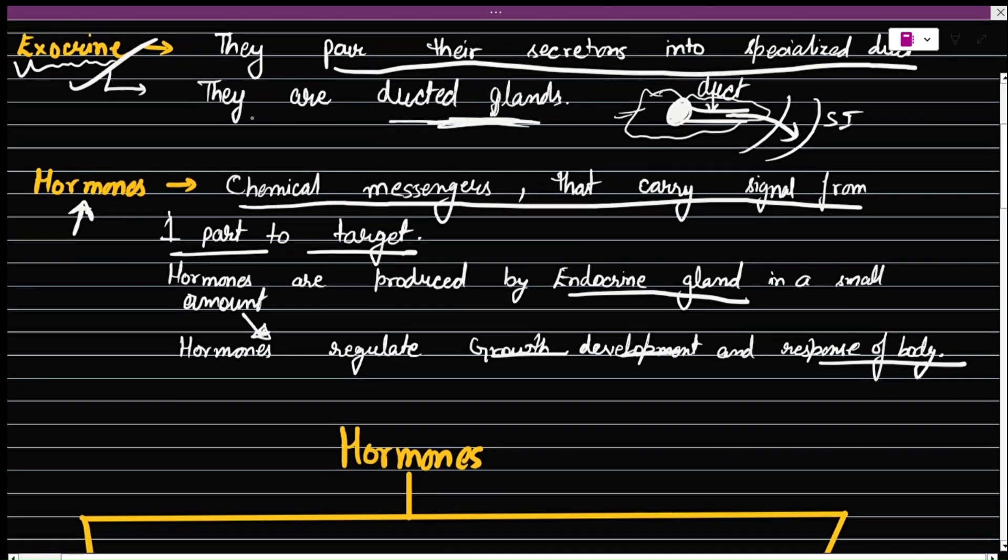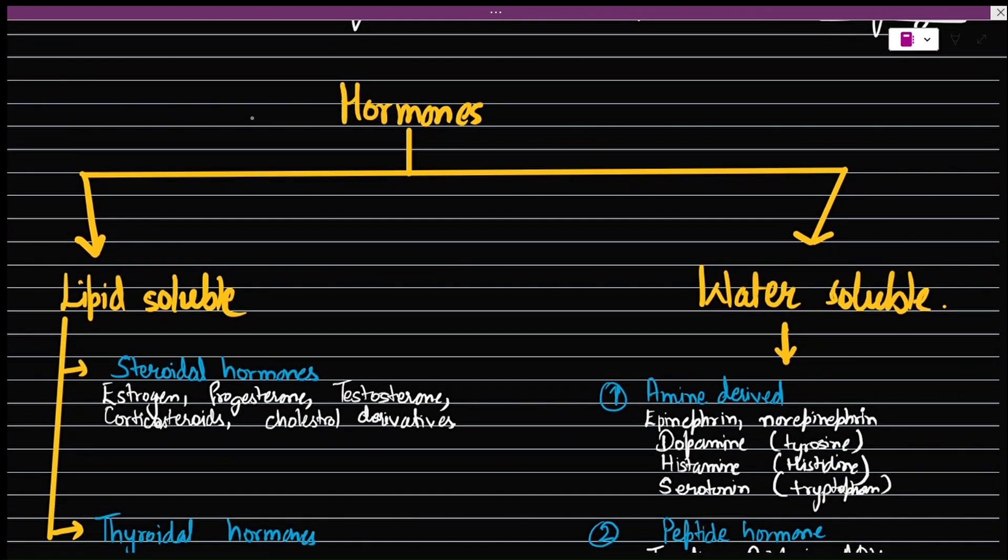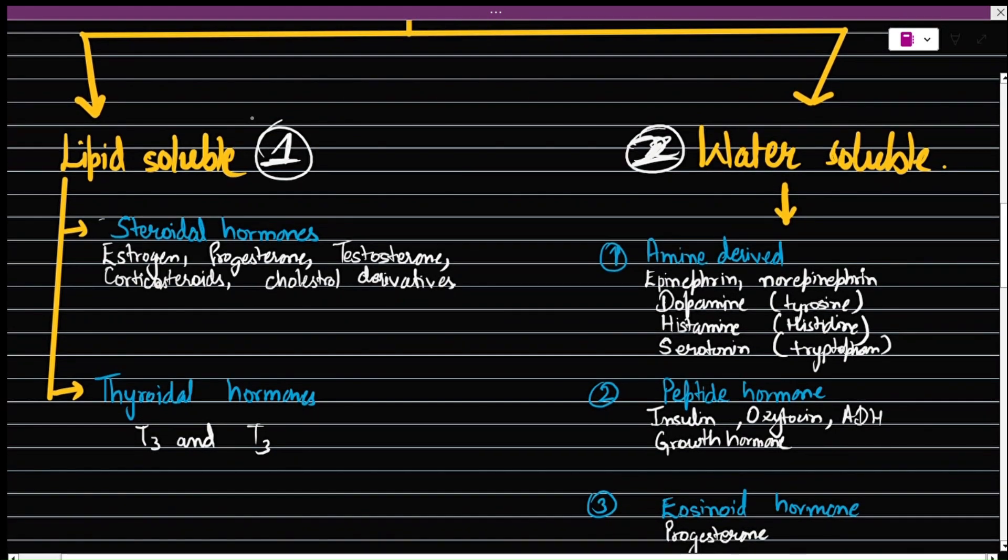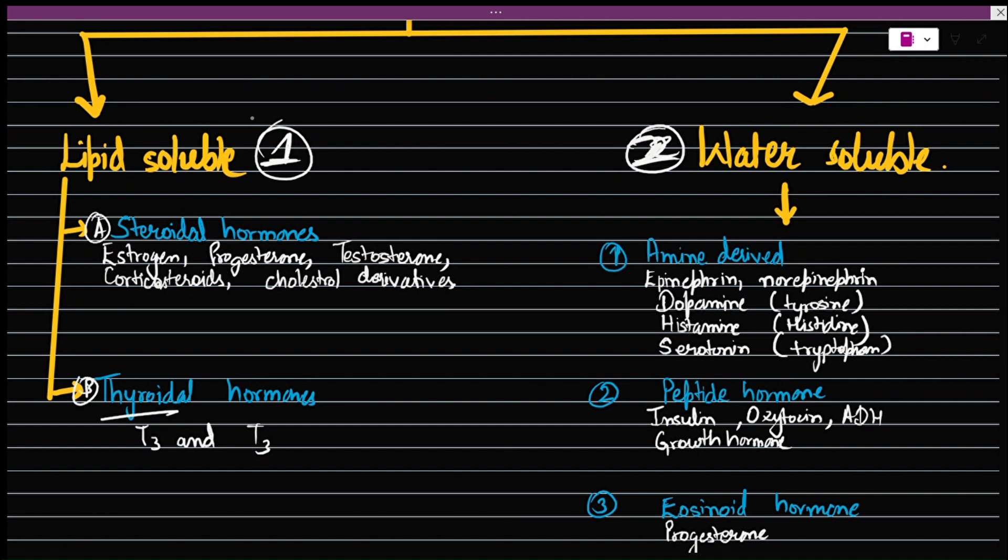Hormones are of two types: first is lipid soluble, and second is water soluble. Lipid soluble contains two types: first is steroidal, and second is thyroidal hormones. Thyroid hormones come from thyroid gland - thyroid iodine. This here, tri-iodothyronine (T3), and T4, which is tetra.